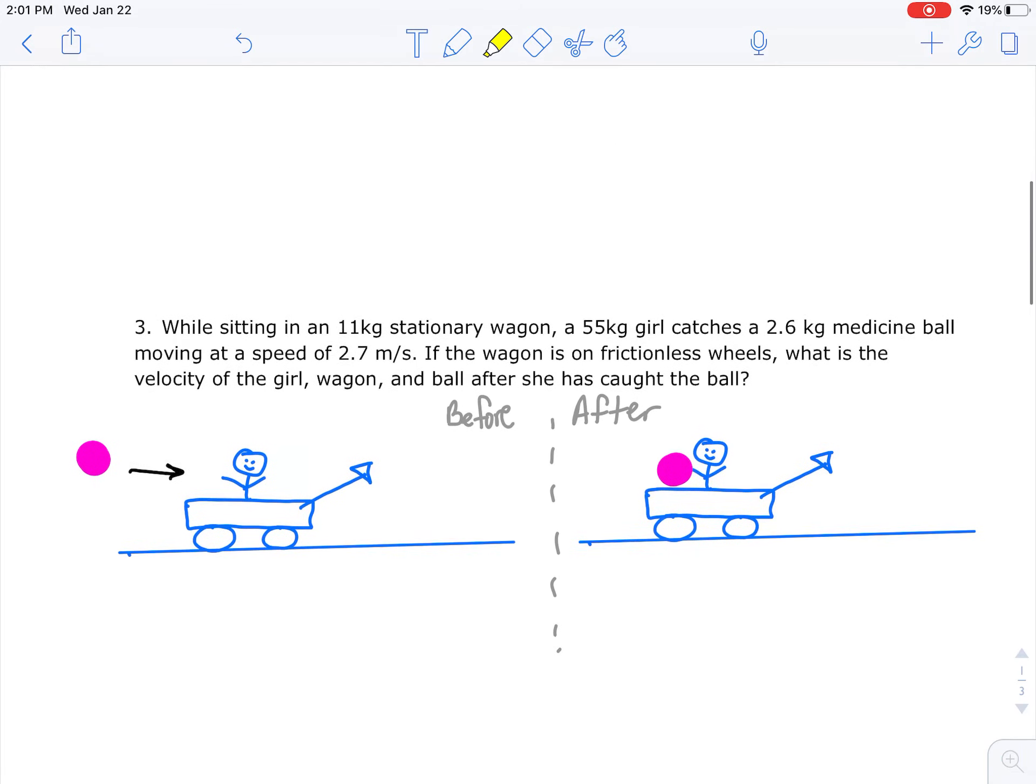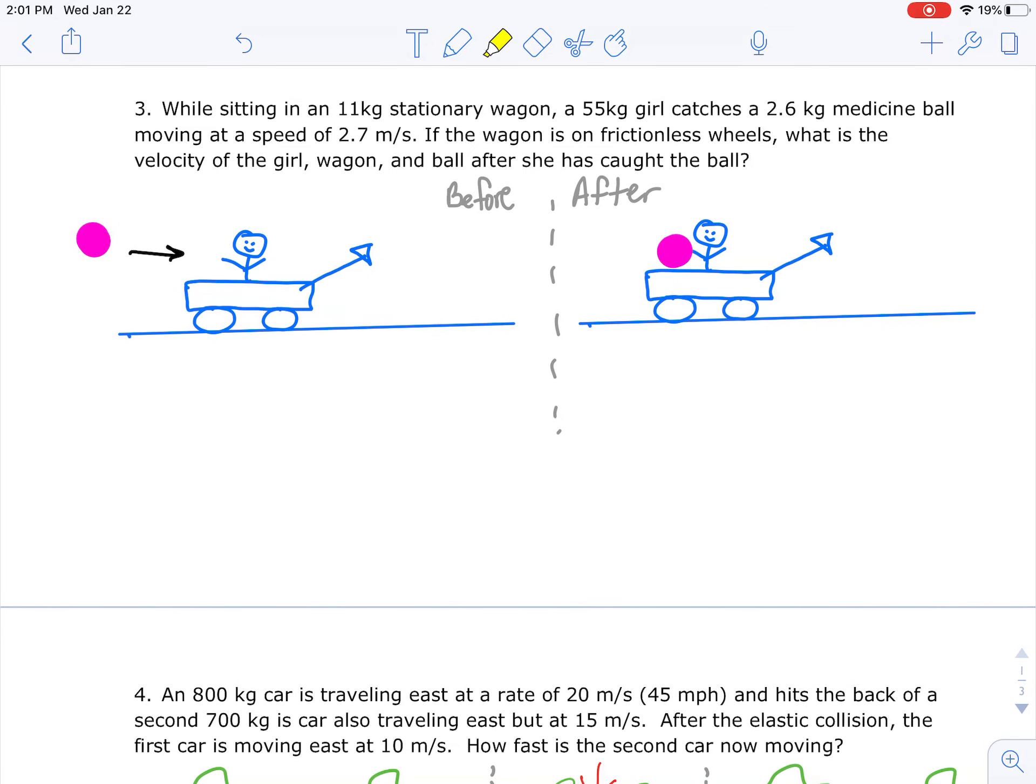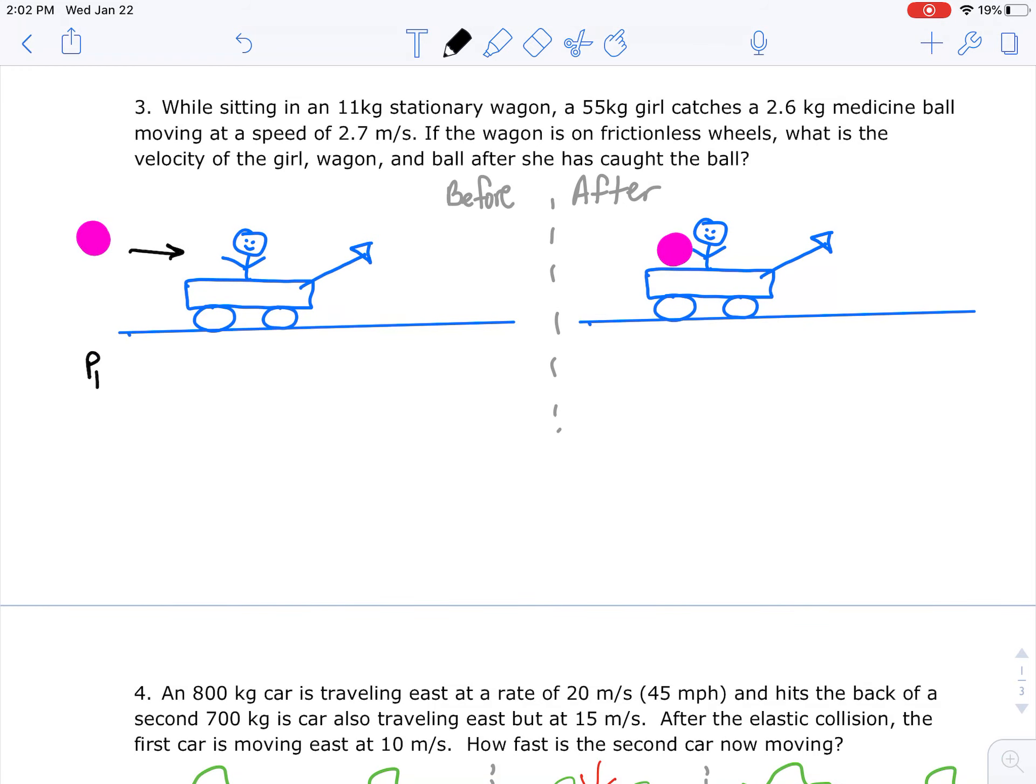I'm going to go ahead now and take a look at number three. Number three has a girl sitting in a wagon and she catches a medicine ball and then rolls away. So there's a before and after. You want to find the momentum of the system before and then set that equal to the momentum of the system after. To find the momentum before, you're going to take the momentum of the ball plus the momentum of the girl in the wagon.